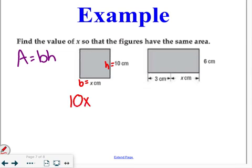The second one, we are looking at 3 centimeters on the bottom and x centimeters on the bottom. So, that means our base is x plus 3. Our height is equal to 6 centimeters. So, in this case, our base times height is going to give us 6 times x plus 3. It asks us to find it so that they have the same area, which means those two values need to be equal.